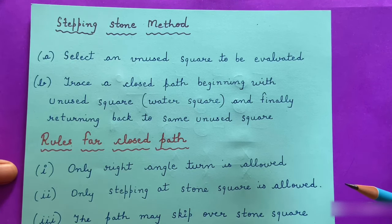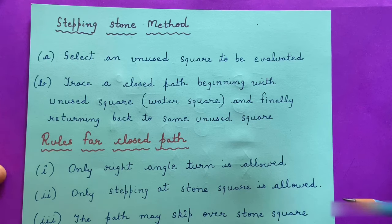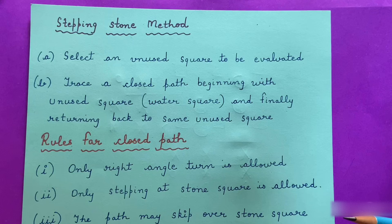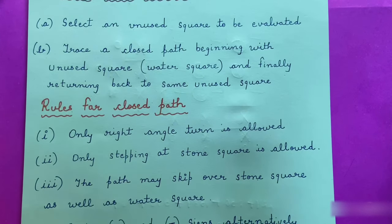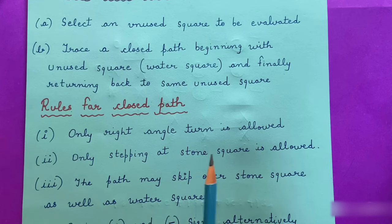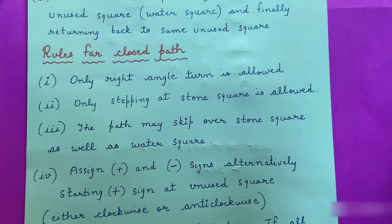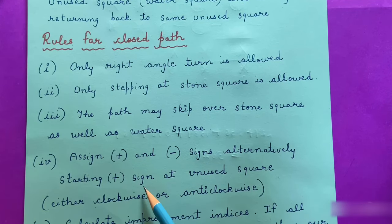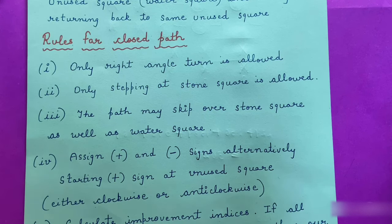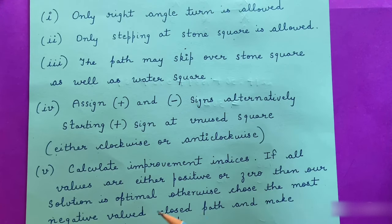In the stepping stone method, we select an unused square to be evaluated, then trace a closed path beginning and returning to that unused square (also called a water square). Rules for the closed path: only right-angle turns are allowed — we can move horizontally or vertically, not diagonally. Only stepping at stone squares is allowed, though the path may skip over stone or water squares. We assign plus and minus signs alternately, starting with a plus at the unused square, in clockwise or anti-clockwise direction.